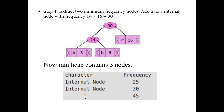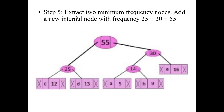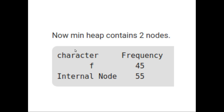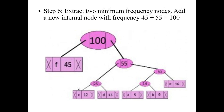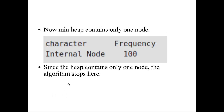Only f is the node having only one element at its root. Now take the two minimum frequency nodes and add a new internal node with frequency 25 plus 30, which equals 55. Add those two nodes. Then you extract f and the internal node 55 and add them, getting 100. Now all elements have been placed with their frequencies in a minimum heap, and there is only one node — the internal node 100. Since there is only one node remaining, the algorithm stops.